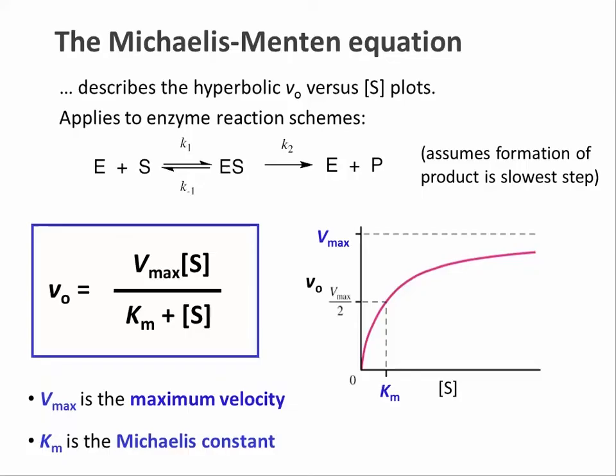That is, the catalytic step is rate-limiting. With these assumptions, we can describe the hyperbolic curve that we get when we plot the initial rate, V0, of an enzyme-catalyzed reaction against the substrate concentration with the following equation: V0 equals Vmax times S over Km plus S, where Vmax is the maximal velocity of the enzyme reaction and Km is the Michaelis constant. And this whole equation is called the Michaelis-Menten equation.